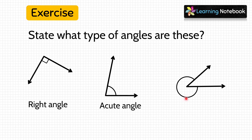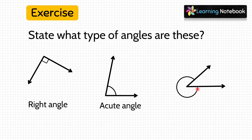Now look at the third figure. Some students mark this as an acute angle, but this is not an acute angle. Students, we should always see the angle being shown in the figure. Here, this angle shown is greater than 180 degrees but less than 360 degrees, so this means it is a reflex angle.